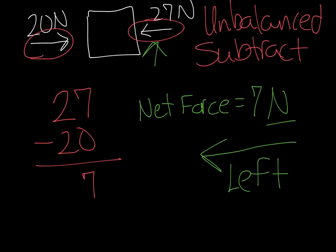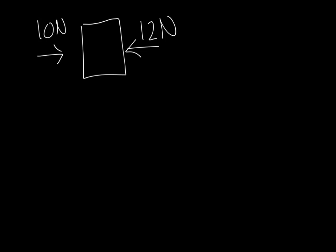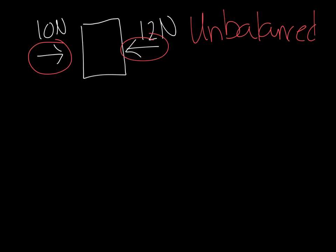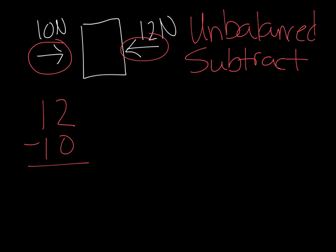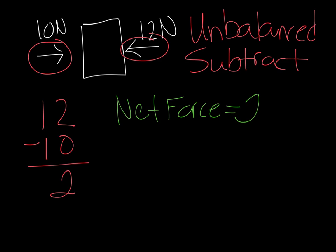Let's take a look at the next example. Try this one on your own — pause the video, work it out, and then look back to see if you got it right. Are these forces equal? They're not equal, so because they're not equal, these forces are unbalanced. Are they going in the same direction or different directions? They're going in different directions — this one goes left, this one goes right — so we have to subtract. We're going to do the math: 12 minus 10. The answer you should have gotten is 2. So our net force equals 2 newtons.